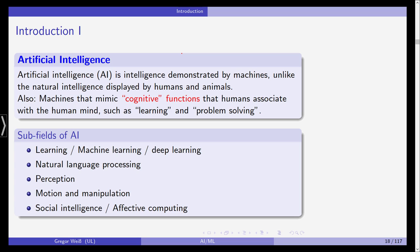Motion and manipulation — we are getting closer to what robots would do. And last but not least, also social intelligence and what we call affective computing. These are all different subfields of artificial intelligence, and machine learning is just one part of AI, which is used quite frequently in finance. That's why I included it in the title, but we will look at all these different subfields in this class.